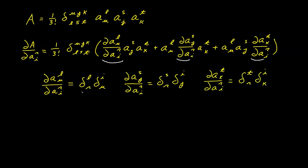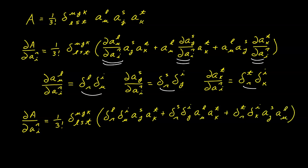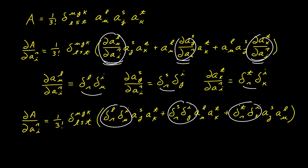Now we can make direct substitutions: this expression substitutes for this one, this substitutes for this, and this substitutes for that one. All I've done here is to replace this factor with these, this is replaced by this, this is replaced by this, and I've rearranged the terms a little bit as well.